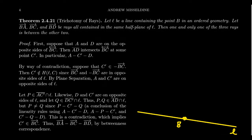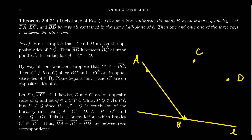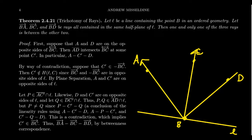If we have a line containing point B in an order geometry, and points A, C, and D all reside in the same half-plane of that line, then looking at rays BA, BC, and BD — all three rays live in the same half-plane — one and only one of the three betweenness statements is true: either BC is between BA and BD, or BA is between BC and BD, or BD is between BA and BC. So trichotomy holds if you live in a half-plane.